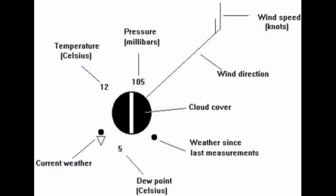The first stage in preparing a synoptic chart is to chart the position of each meteorological station. These are marked by a small circle. The weather report for each station is then plotted in and around the circle. Elements like temperature and pressure are entered as plain figures.